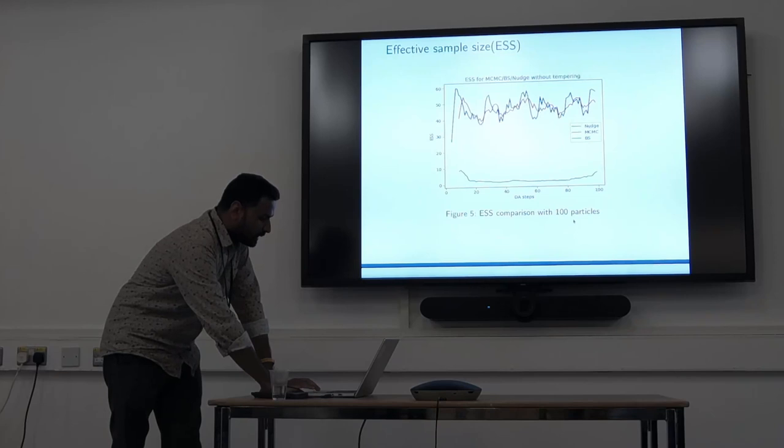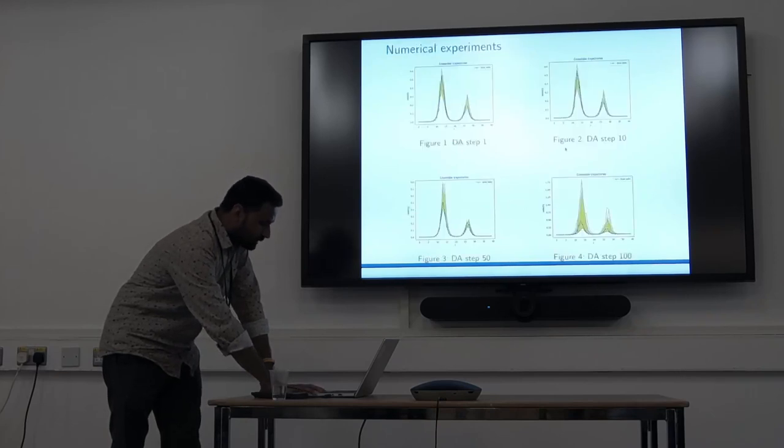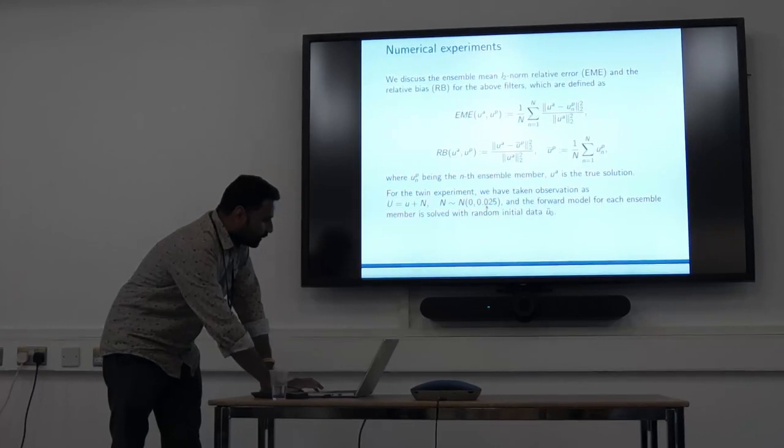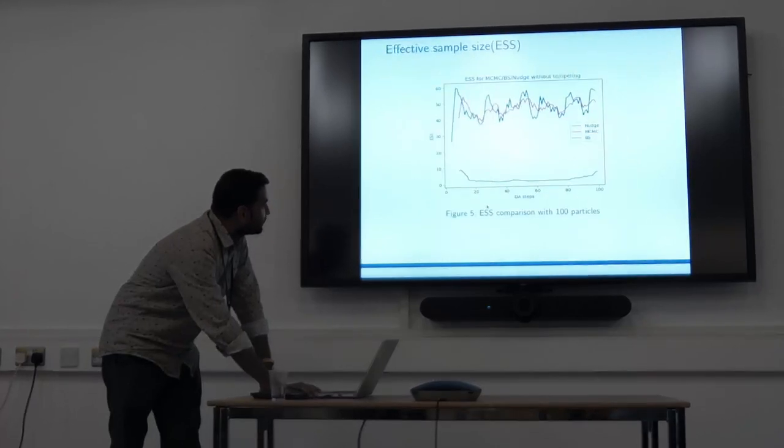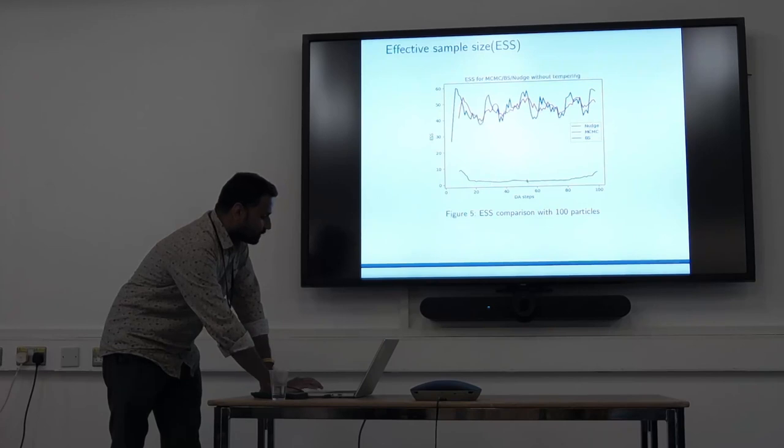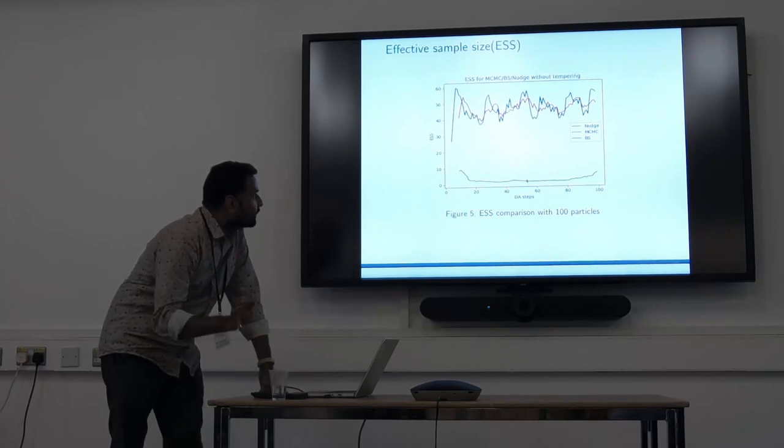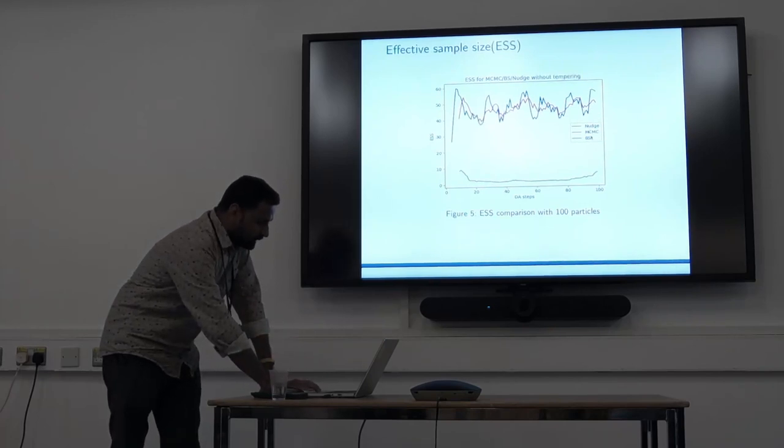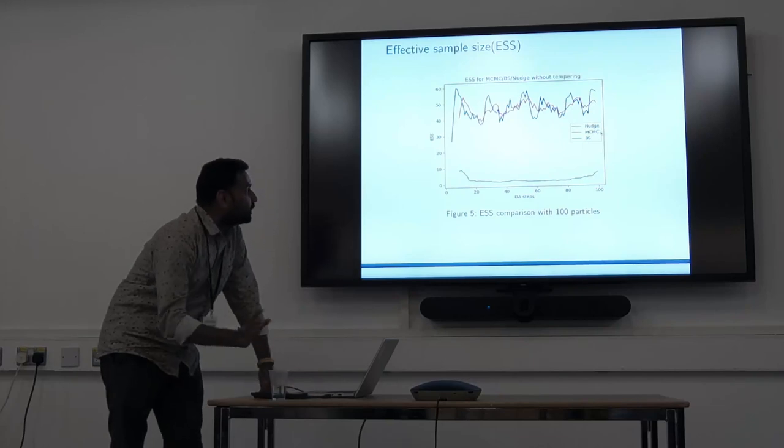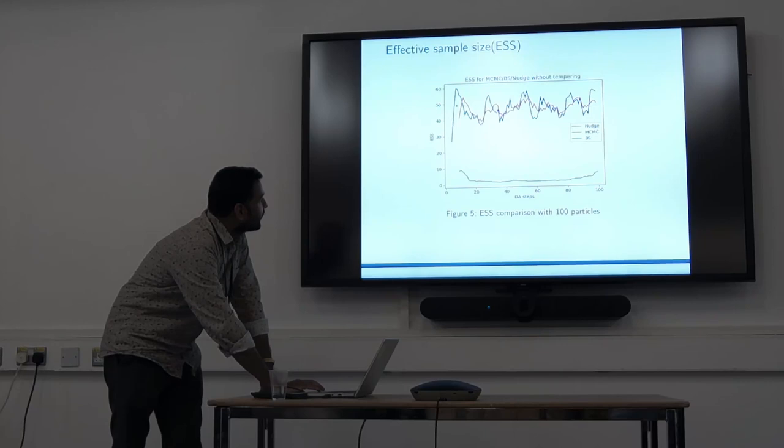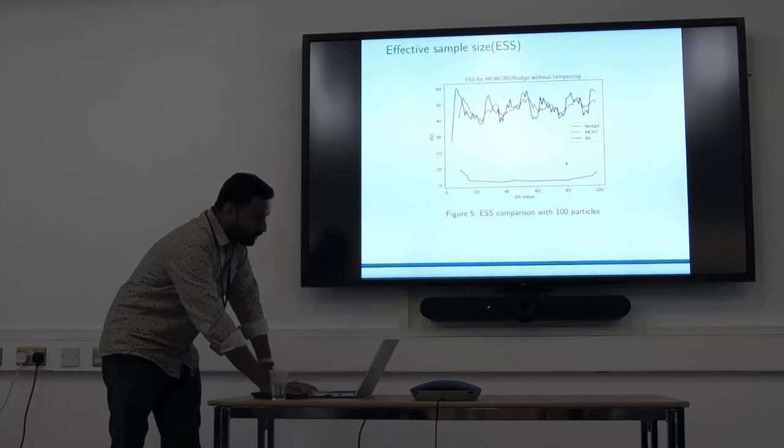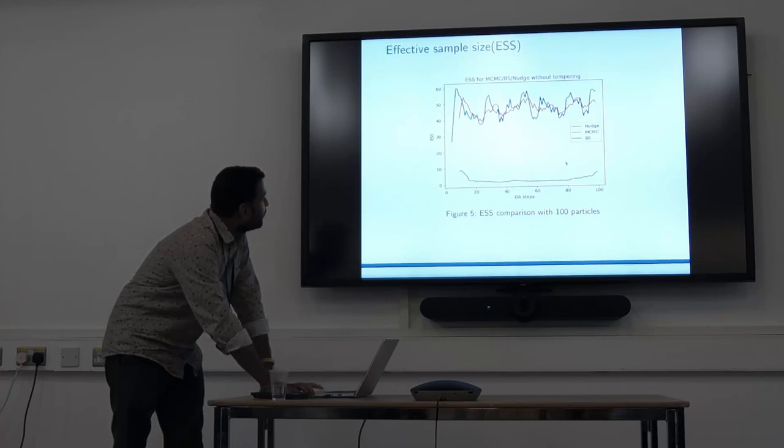This is the effective sample size. We have 100 particles. Bootstrap filter, if data is informative, doesn't work because it will have only one or two particles, around below 10 or something. Nudging and MCMC without any tempering still have a good 60 or 50 ESS without doing any tempering, so they're performing well.